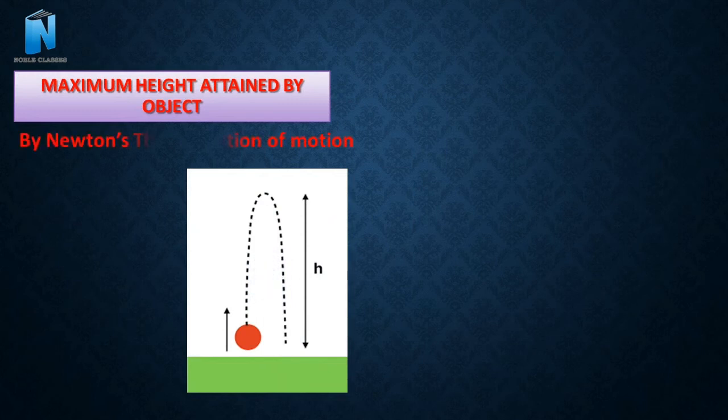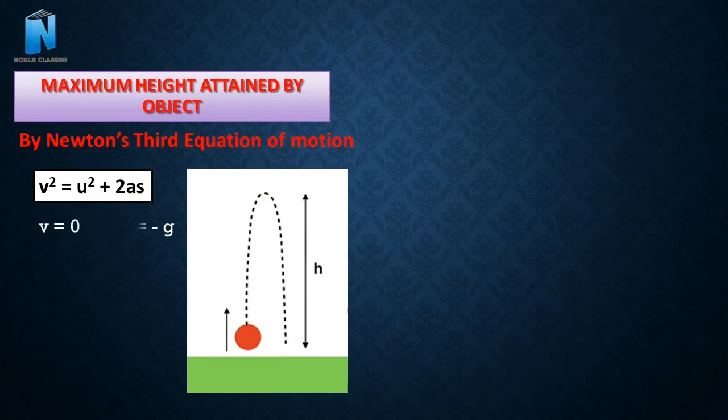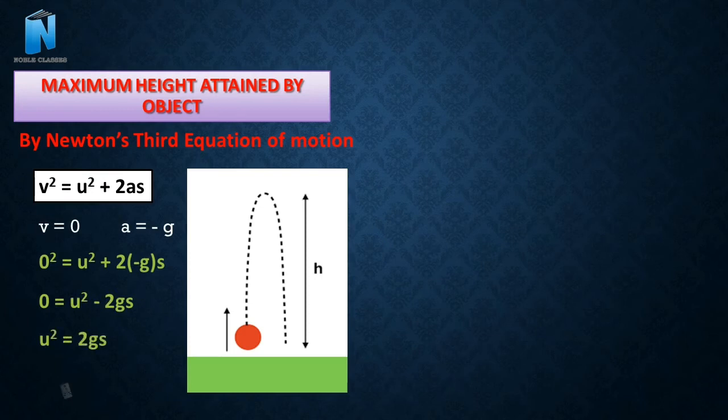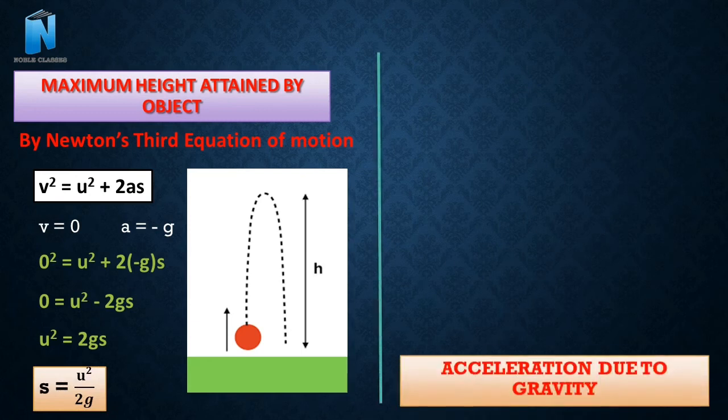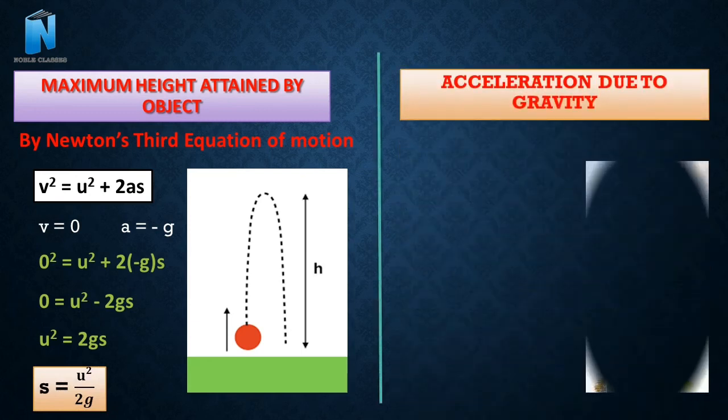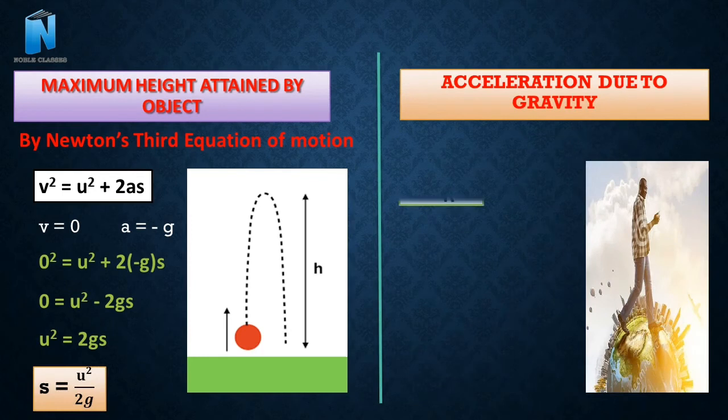We should know what is the maximum height attained by an object when we throw any object in the upward direction. Due to Newton's third equation, we have V square is equal to U square plus 2 A S where V is 0. Final velocity will be 0 and acceleration will be minus G. The maximum height attained by a ball will be U square upon 2 G.